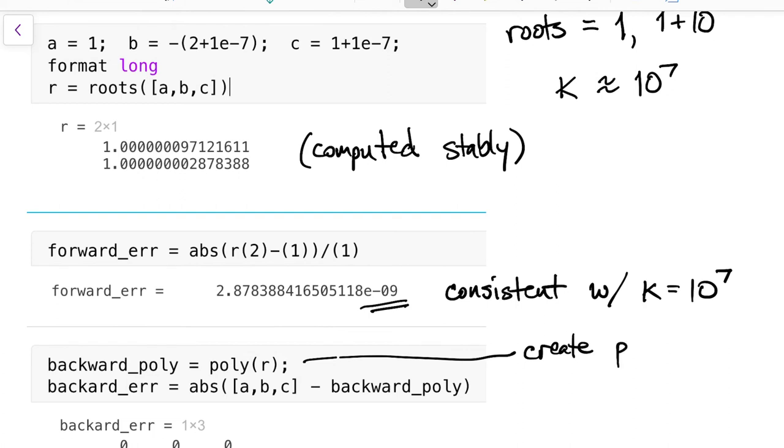To find the backward error, we're going to find the data, in other words the polynomial, that produced the roots we actually saw. In MATLAB, there's a command called poly that does this. So this is the x tilde that's in the abstract picture above. And then the backward error is the difference between that polynomial and the one we started with. It turns out that we actually got exactly the same polynomial. So it's a bit of a paradox. Even though the forward error is wrong in terms of the exact numbers, we did solve the problem for the floating-point representations of that polynomial. That's the best we can do.